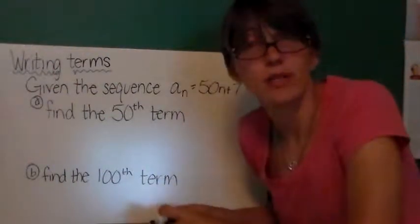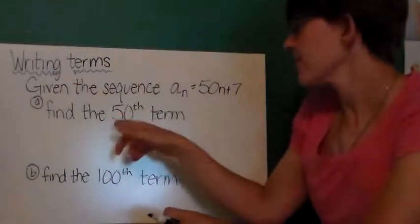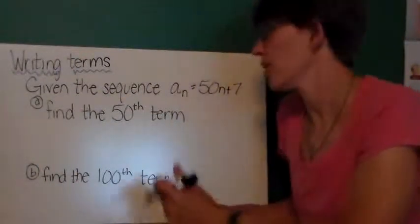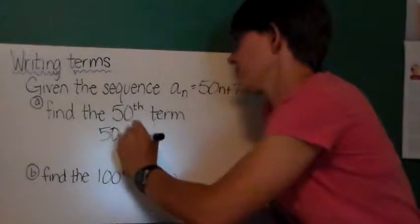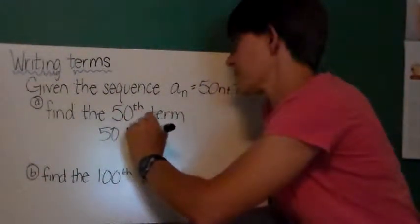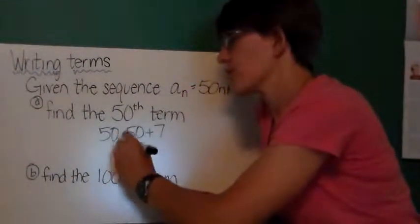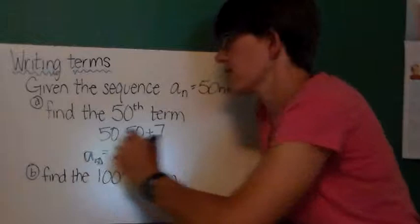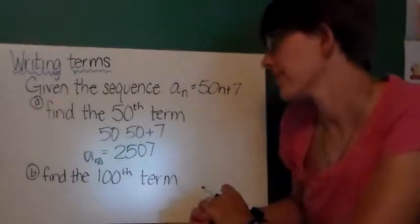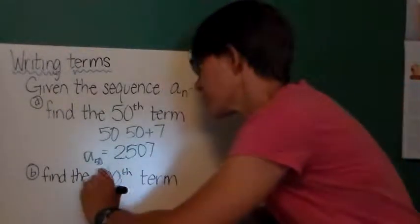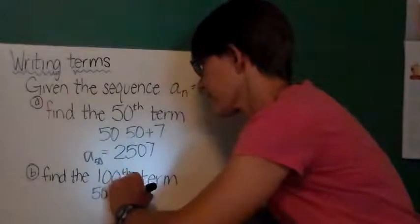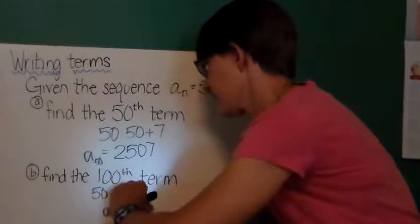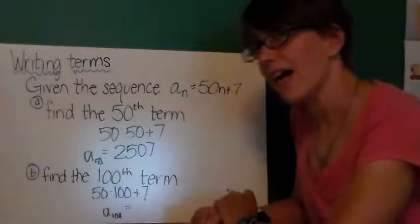Now, let's say we don't want to write the terms all in a row and start looking for a pattern this way. Well, here, if I want to find the fiftieth term in the sequence that is defined 50 times n plus 7, well, 50 times 50 is 2500 plus 7 is 2507. So a sub 50, the fiftieth term, is 2507. To find the hundredth term, I would do pretty much the same thing. Replace n with 100, multiply and add. I get a sub 100 is equal to 5007.